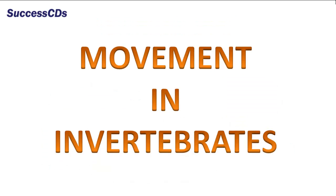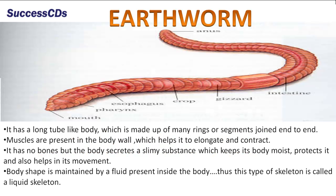Let us now learn about the body movements of some invertebrates. An earthworm has a long tube-like body which is made up of many rings or segments joined end to end. Muscles are present in the body wall which help it to elongate and contract. It has no bones, but the body secretes a slimy substance which keeps its body moist and protects it, and also helps in its movement.